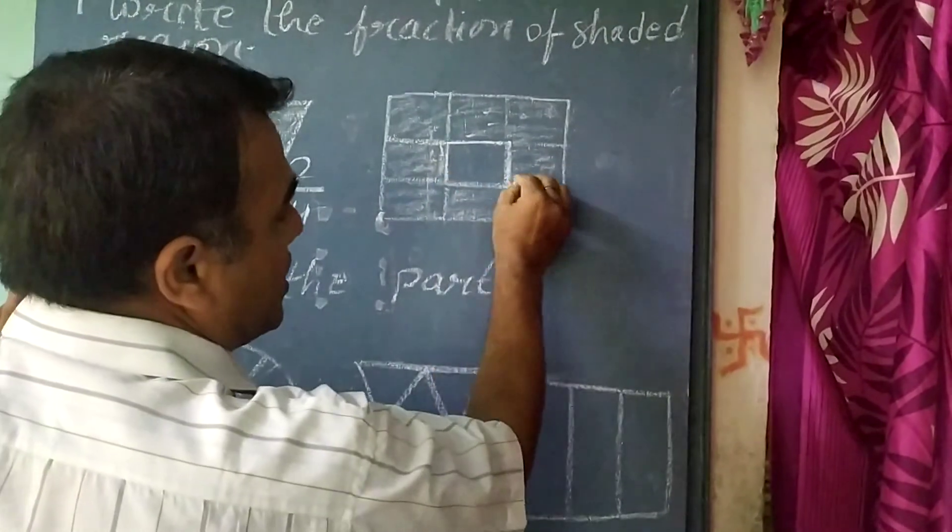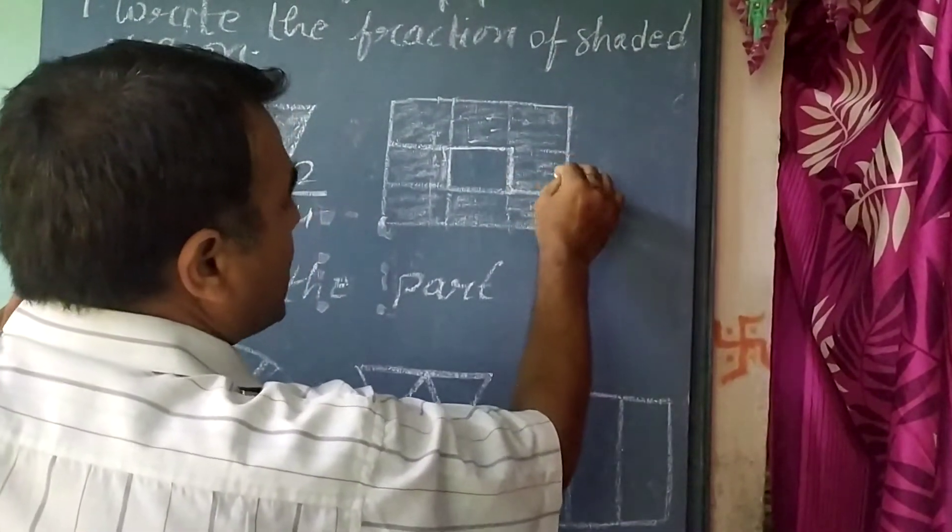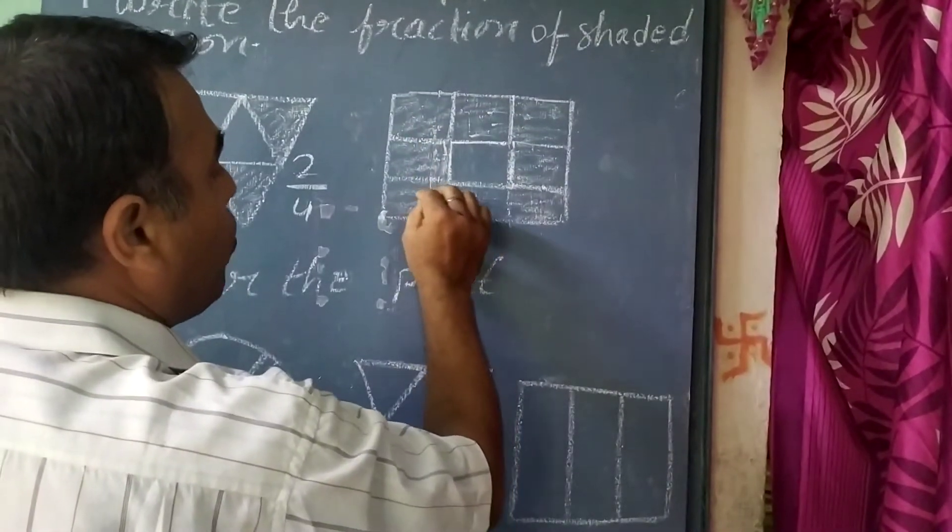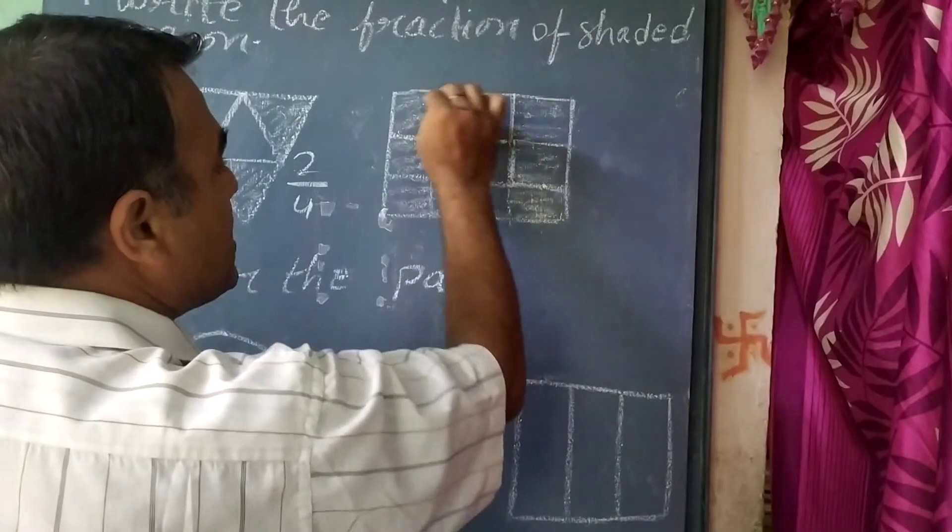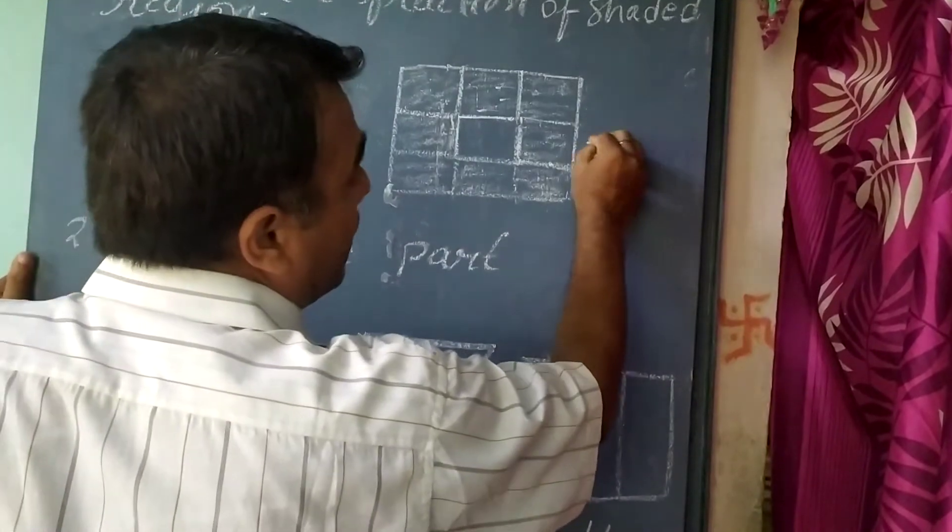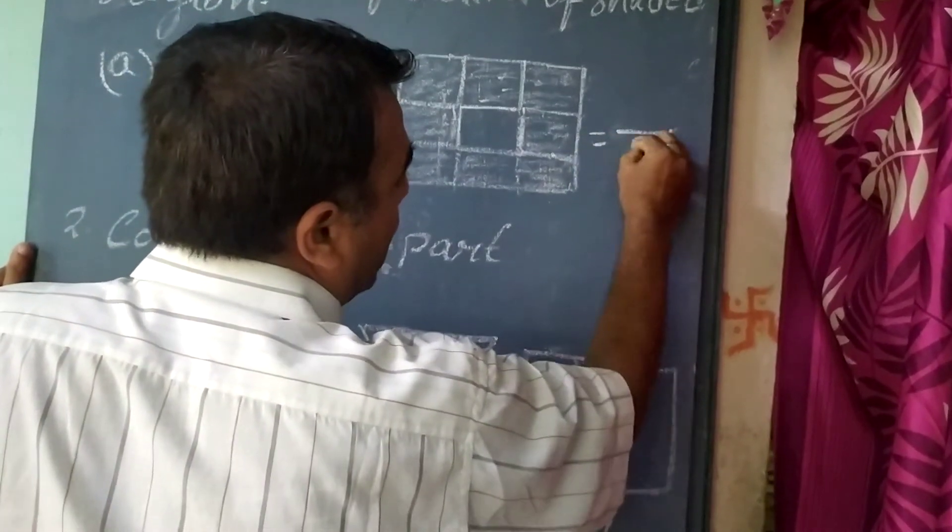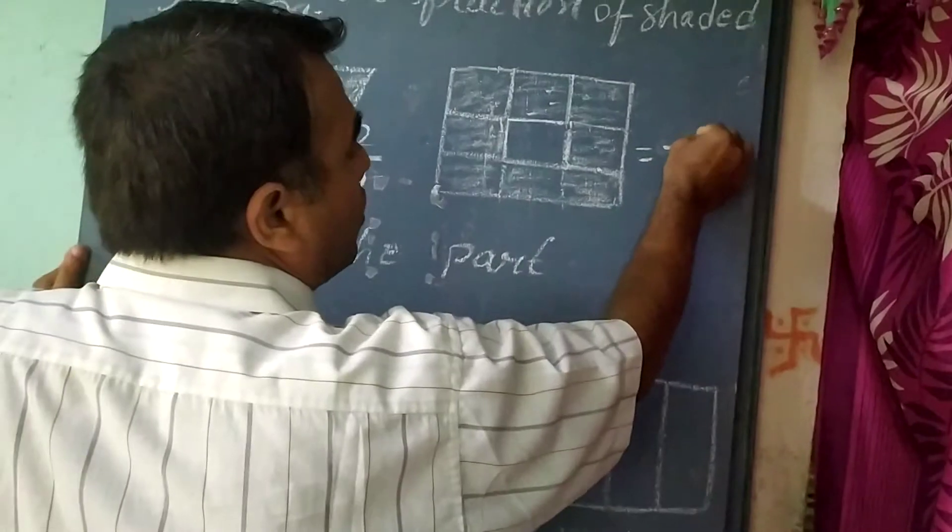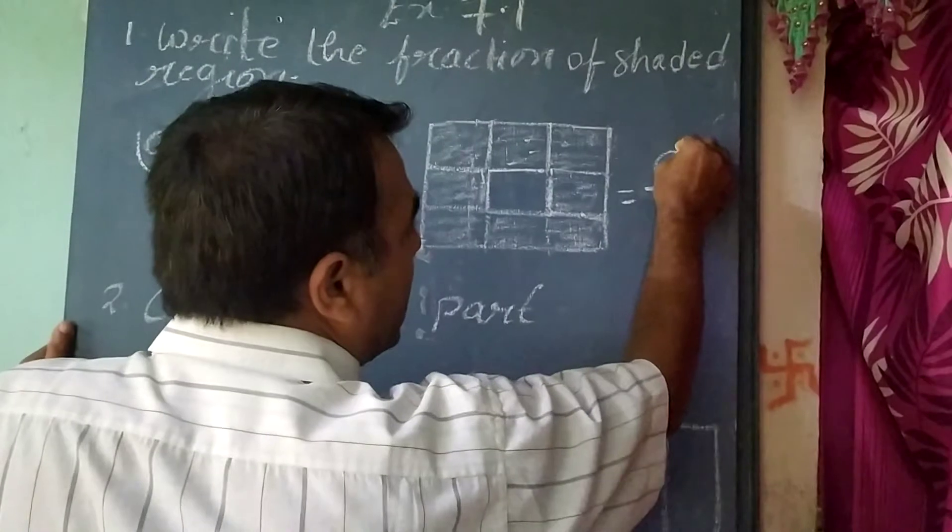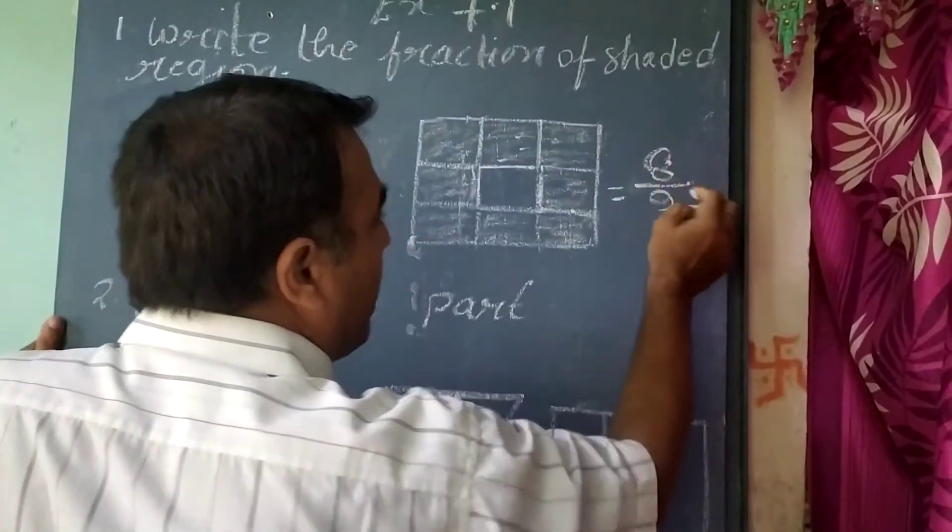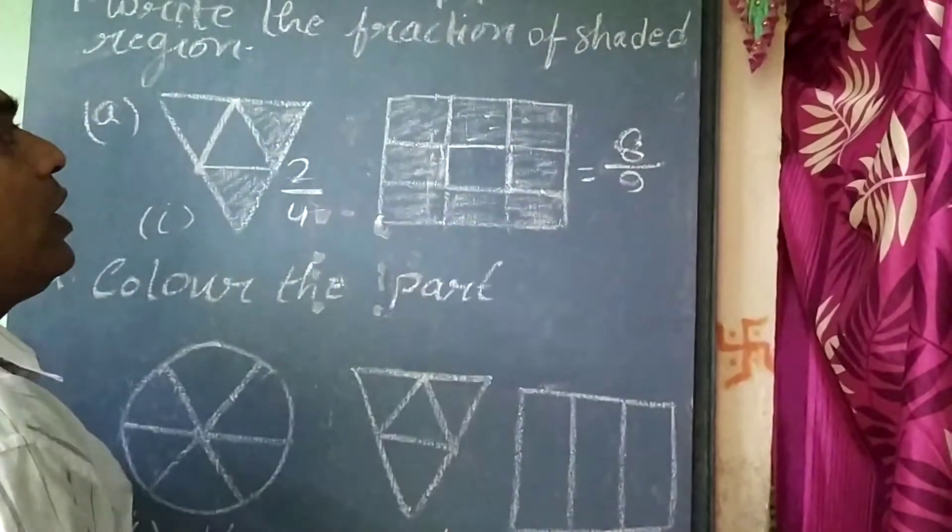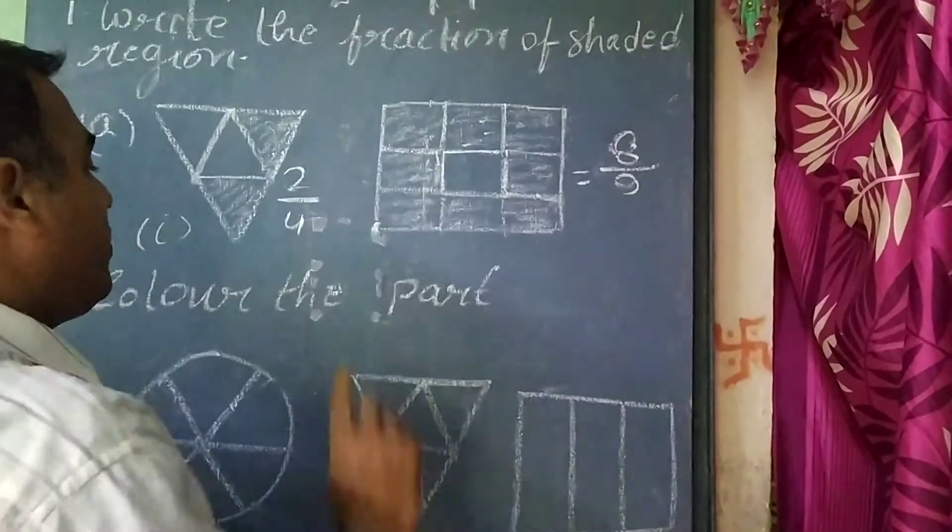Here, as you can see, in a big rectangle there are small rectangles constructed. The shaded portions are 1, 2, 3, 4, 5, 6, 7, 8. And total rectangles are 9. We will write 9 in the denominator and 8 in the numerator. The fraction becomes 8 by 9. In this way, we have written the fractions of the shaded portions.